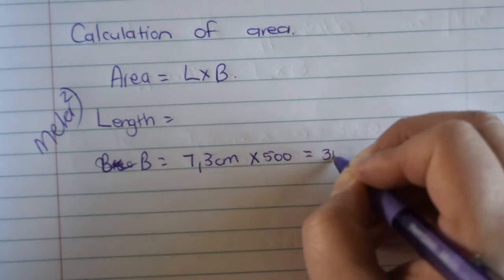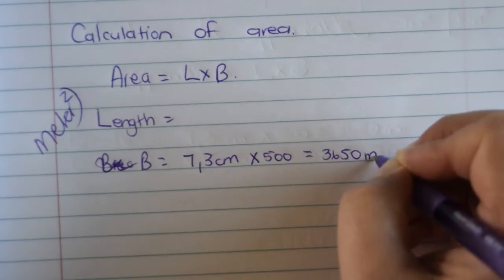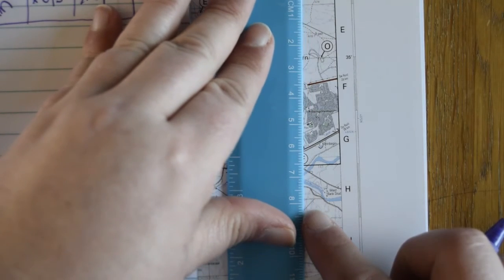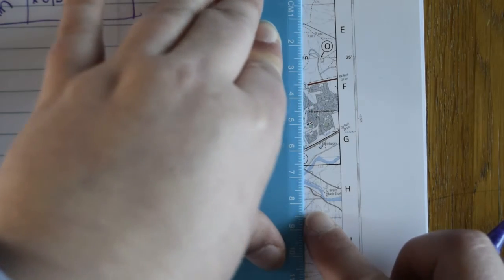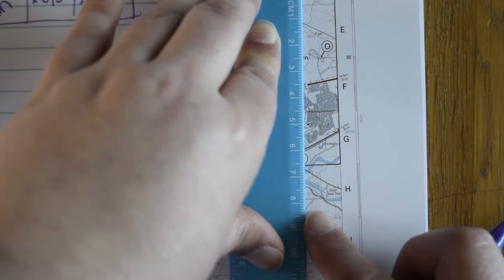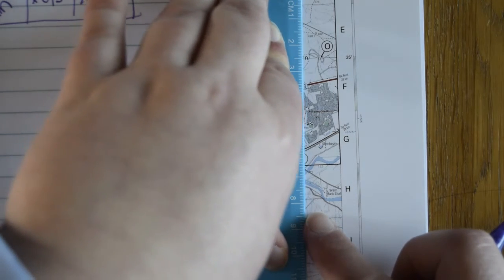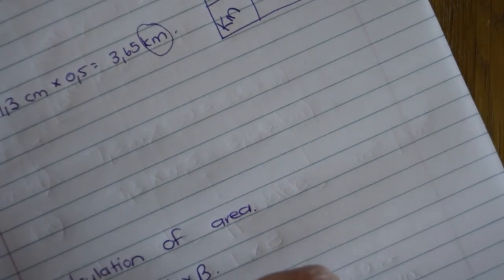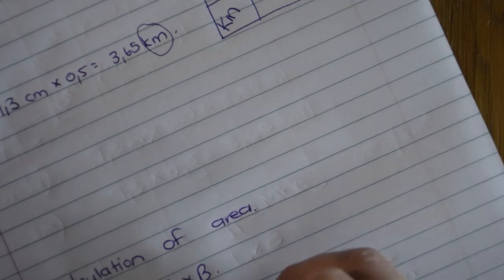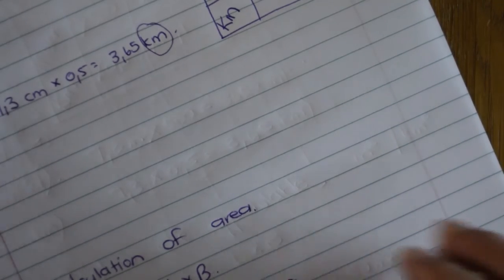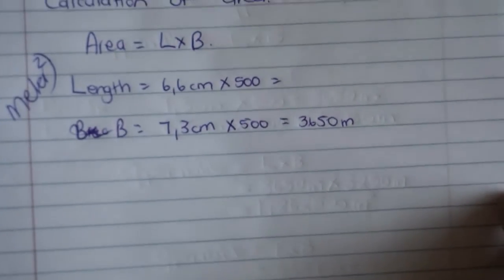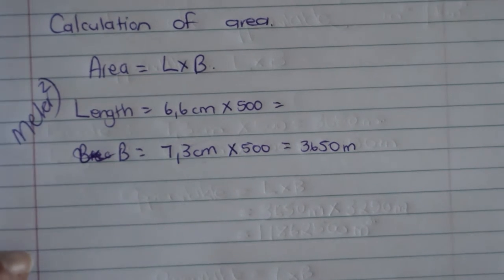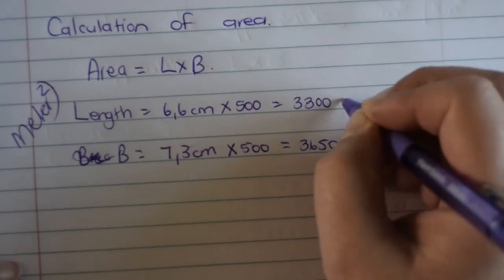Okay. So I'm going to say 7.3 multiplied by 500. And that gives you 3650 meters. With the length, again, you take your ruler and you measure, you will see it is 6.6 in this case. So you will say 6.6 centimeters multiplied by 500. And that will give you 3,300 meters.